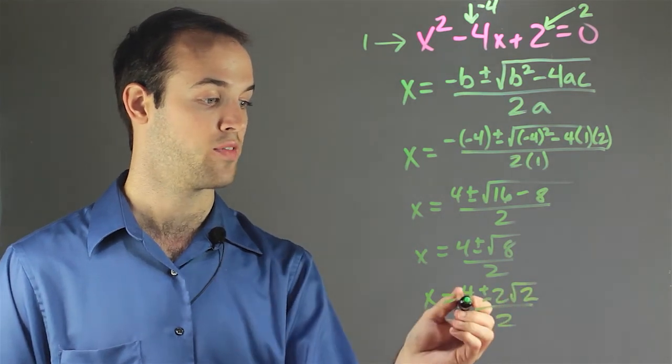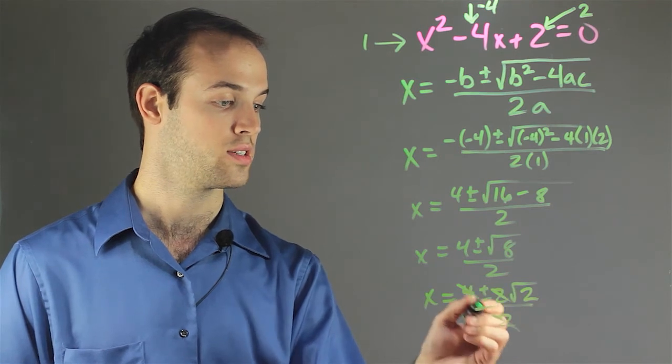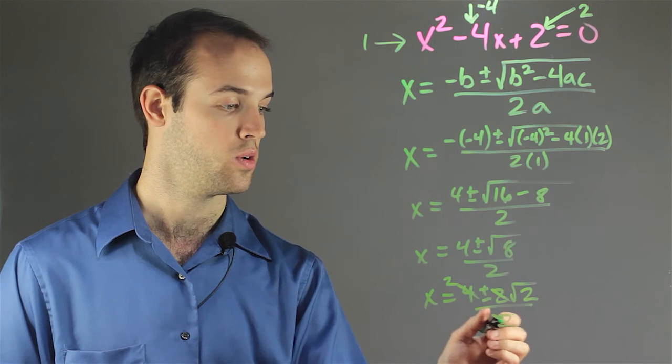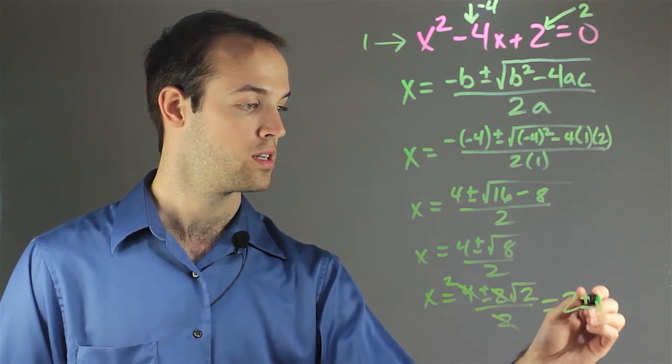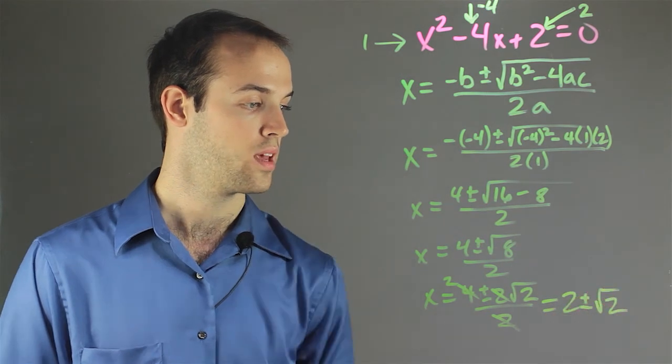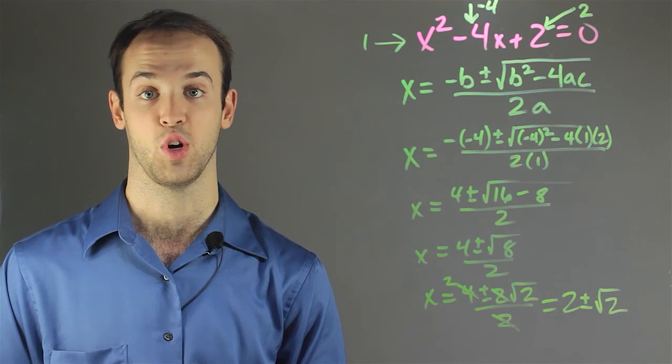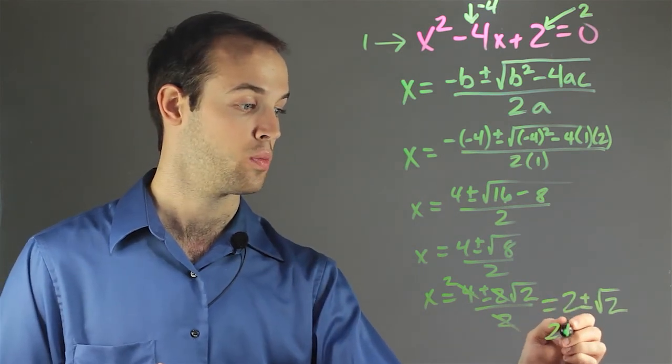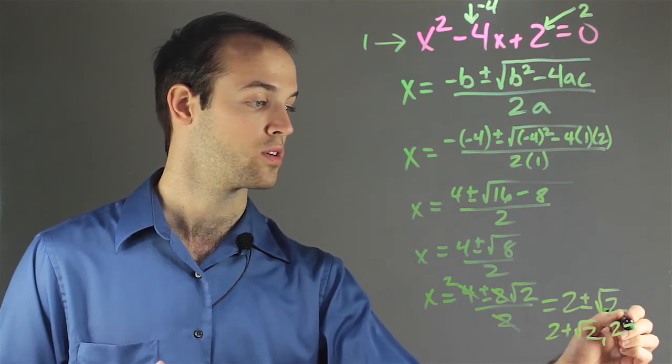And now I can simplify this by crossing out a 2 from each one of the factors. So I have x is equal to 2 plus or minus the square root of 2. And again, the plus or minus is there because a quadratic is going to yield two different answers for x. So x is either equal to 2 plus the square root of 2, or 2 minus the square root of 2.